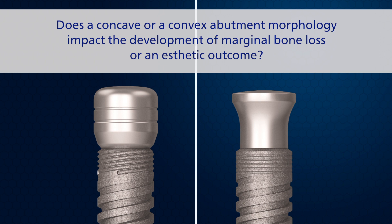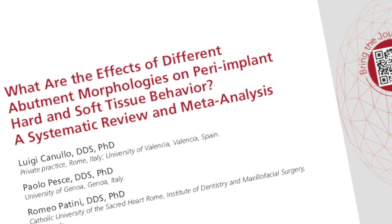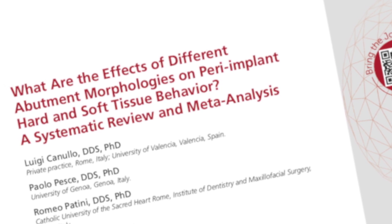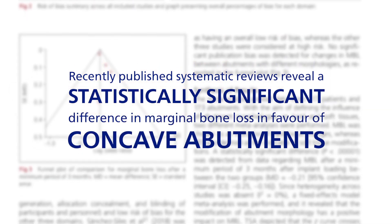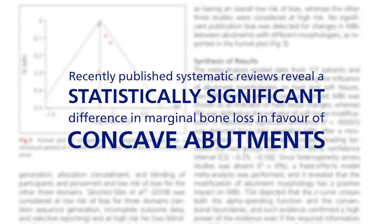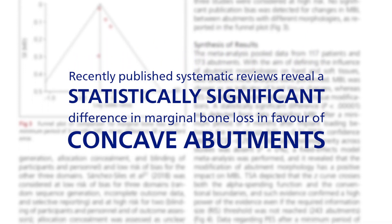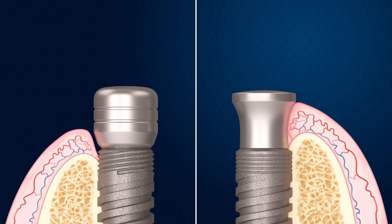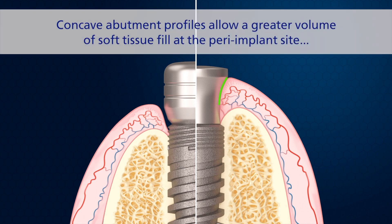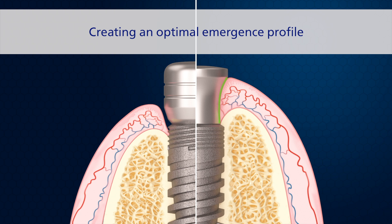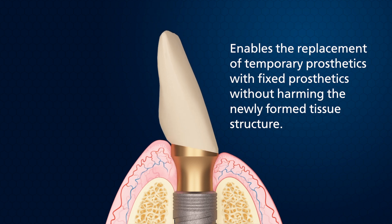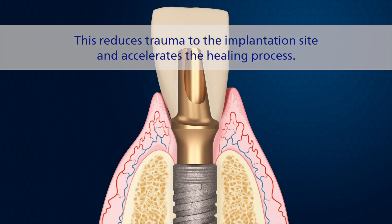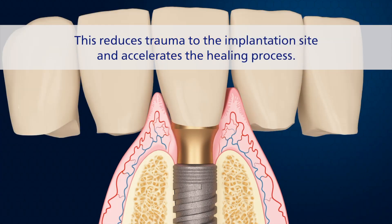There has been much interest in whether a concave or a convex abutment morphology impacts the development of marginal bone loss or an aesthetic outcome. The recently published systematic reviews are based on documented human trials examining the difference in hard and soft tissue outcomes of concave abutments, and revealed a statistically significant difference in marginal bone loss in favour of concave abutments. Concave abutment profiles have been advocated as the superior choice since they allow a greater volume of soft tissue fill at the peri-implant site, creating an optimal emergence profile enabling the replacement of temporary prosthetics with fixed prosthetics without harming the newly formed tissue structure. This reduces the trauma to the implantation site and accelerates the healing process.